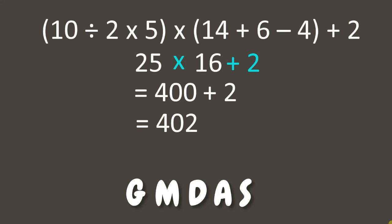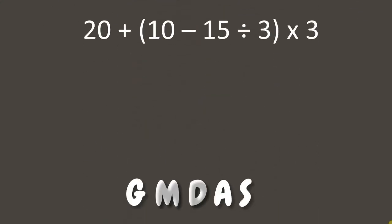Then lastly, we add 2, and the final answer is 402. Wonderful! Now let's have another example. Again, let's use the GMDAS rule. First, let's solve everything inside the grouping symbol.